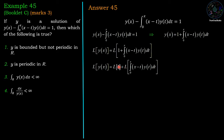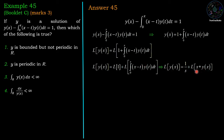The Laplace of 1 is 1/s. Comparing the integral with the convolution definition — integration from 0 to x of f(x minus t) g(t) dt — we identify f(x minus t) as (x minus t), so f(x) equals x, and g(t) equals y(t), so g(x) equals y(x). Therefore this integration represents the convolution between x and y(x), written as x star y(x).